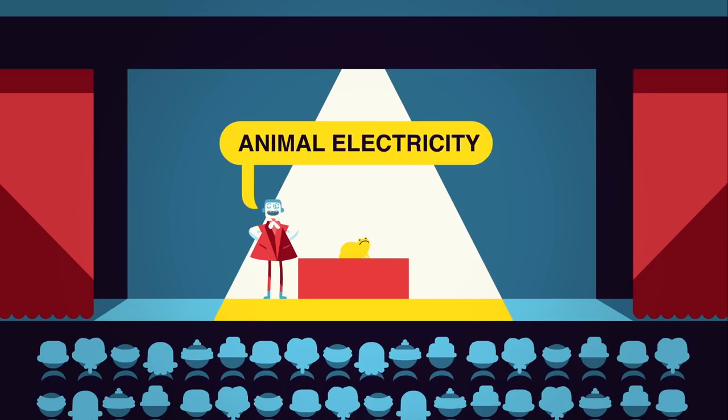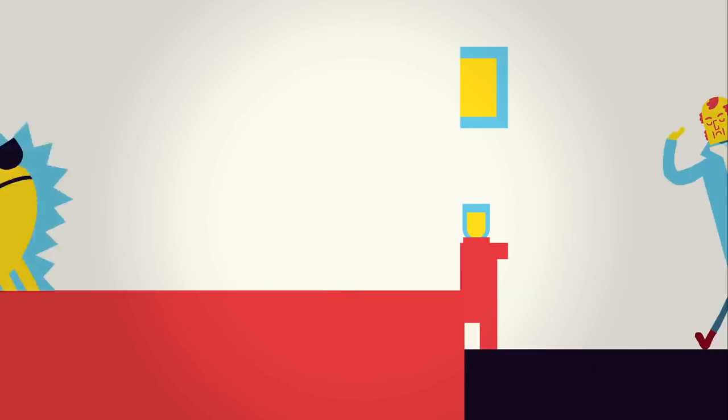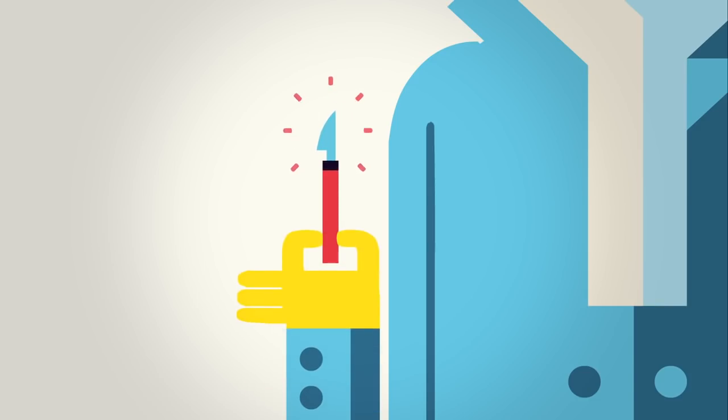Galvani called this animal electricity, believing that a type of electricity was stored in the very stuff of life. But Volta disagreed, arguing that it was the metal itself that made the leg twitch.